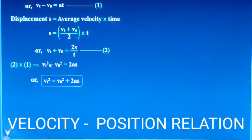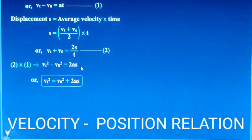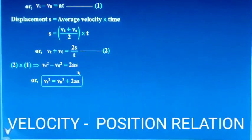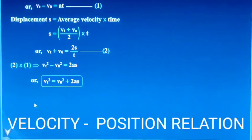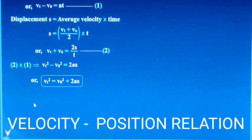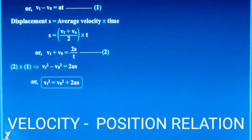v square is equal to 2as. So this is kinematic equations for uniformly accelerated motion — the equations of motion. Thank you.